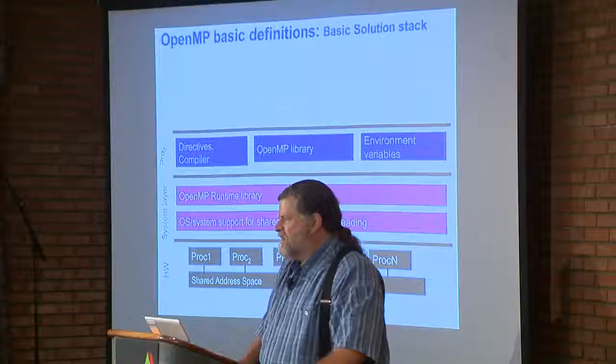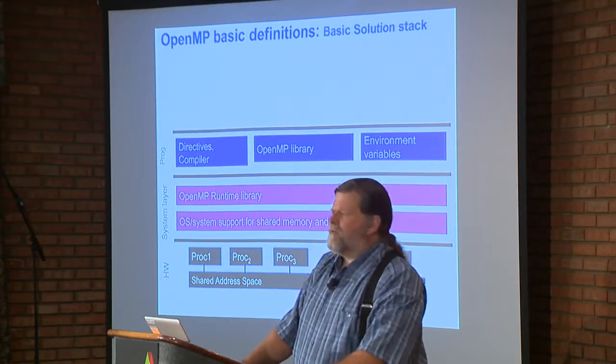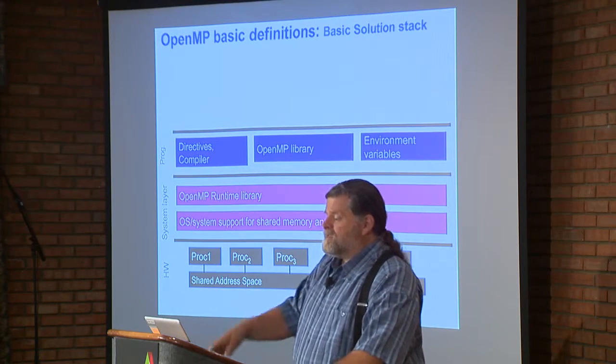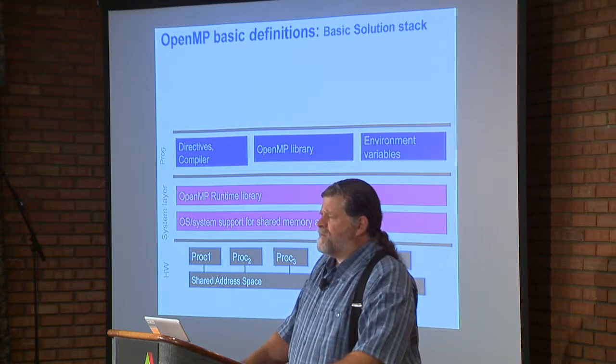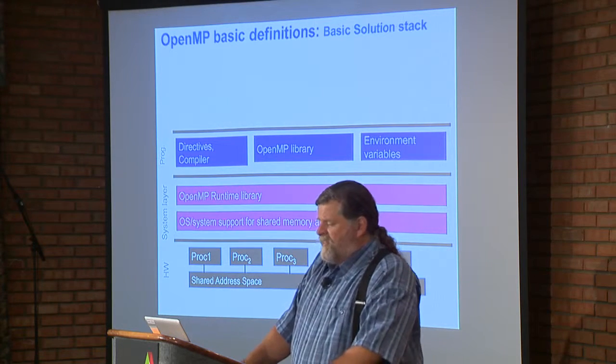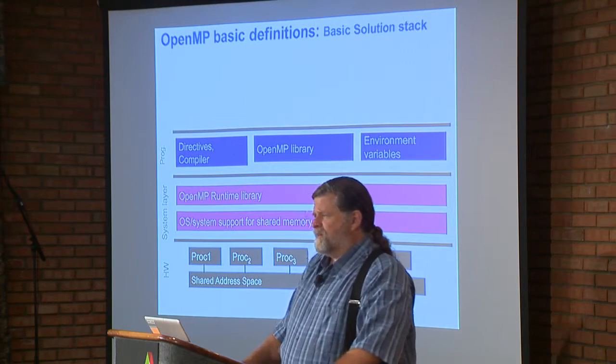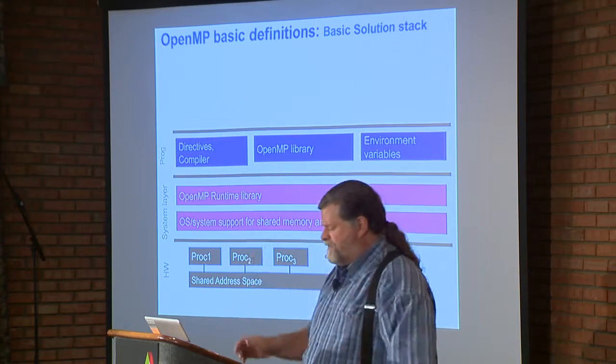Then there are features that have to happen at runtime. The directive tells the compiler to transform the code to do a specific thing, but there's other stuff that just has to happen at runtime, so that's in a library. Things like: what's my thread ID? How many threads did you actually give me? So there's a small number of runtime library routines you have to use, and then there's a handful of environment variables — these are the things you use to manipulate OpenMP.